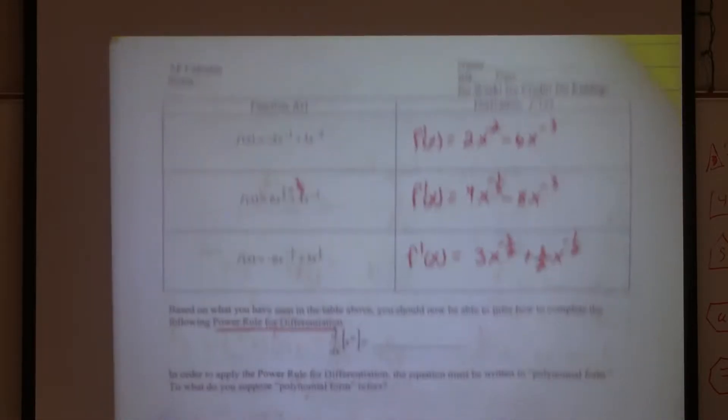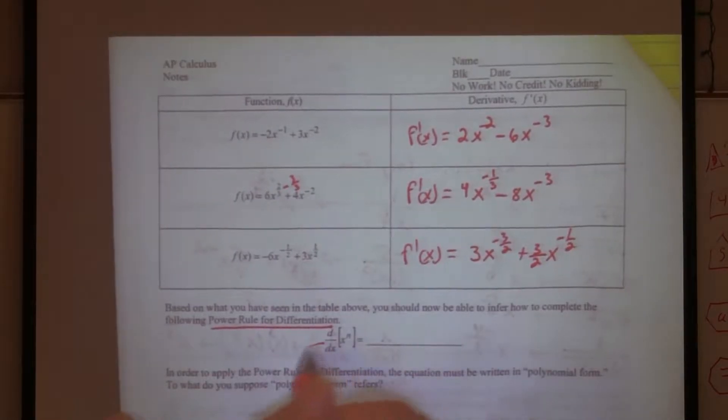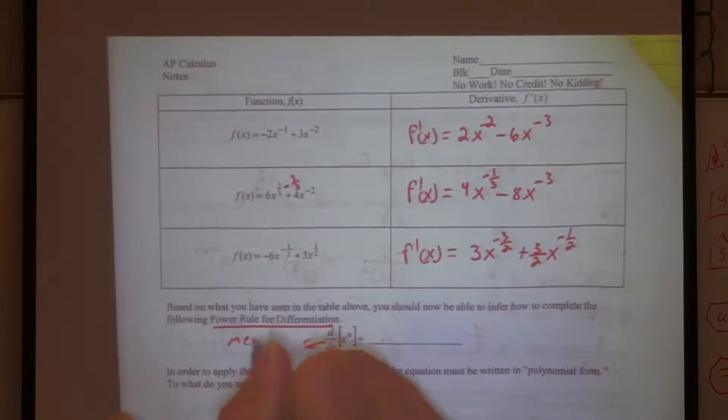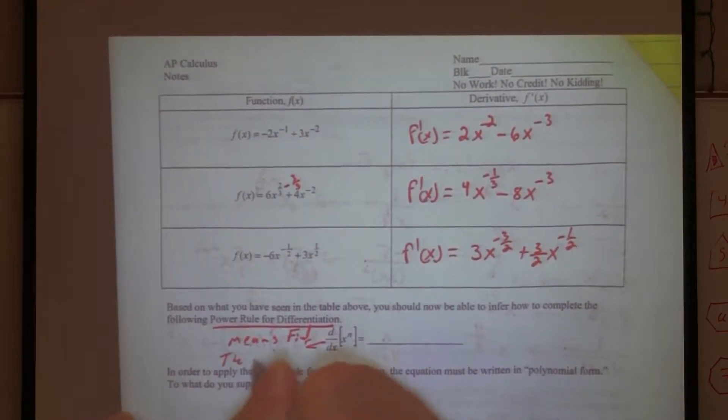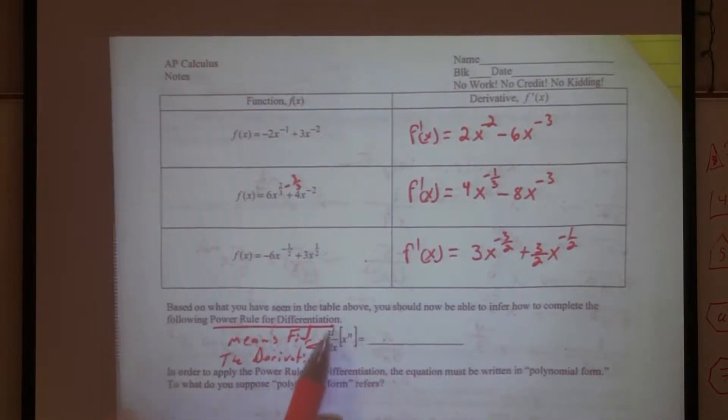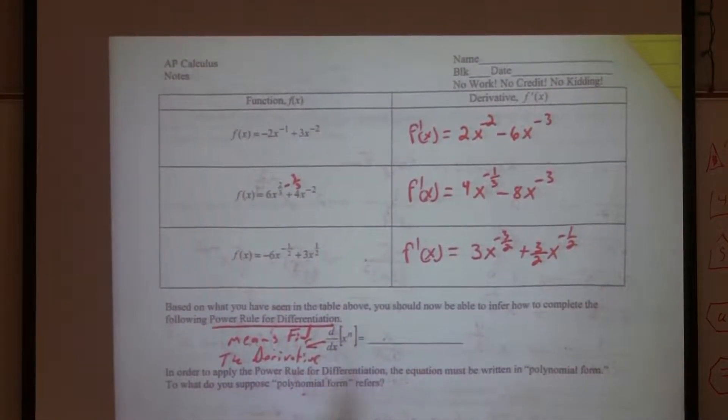Differentiating, defining the derivative. Okay, that's what this notation means here. It means find the what? Derivative. So if you ever see d over dx of something, that means find the derivative of that something.